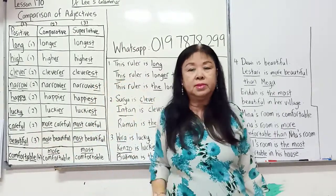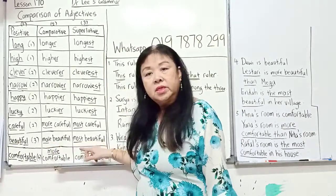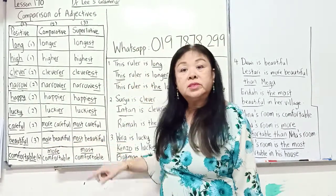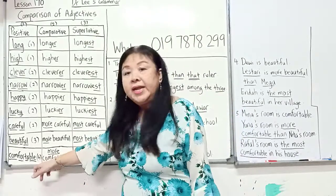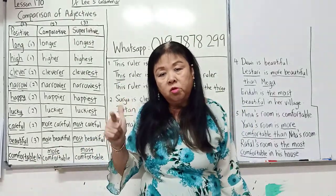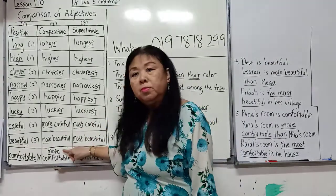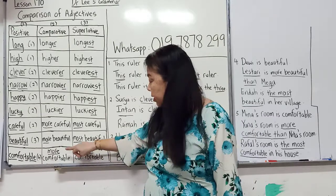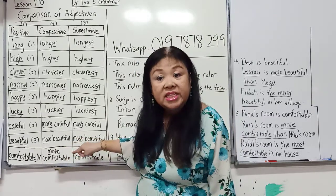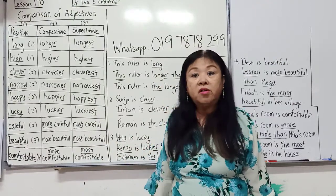Beautiful has three syllables — three syllables usually takes more and most: more beautiful than, and the most beautiful. Comfortable has four syllables — four syllables, you put more or most: more comfortable than, and the most comfortable.